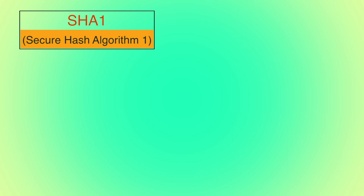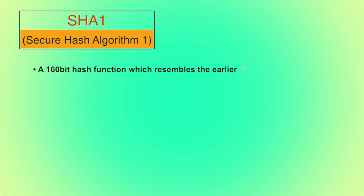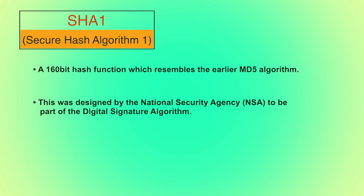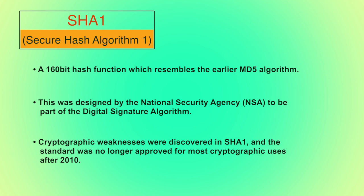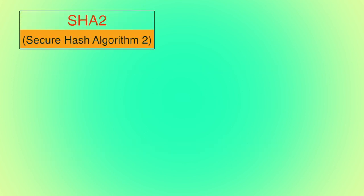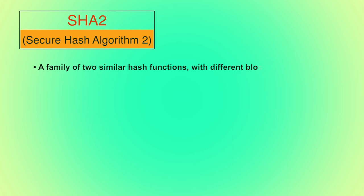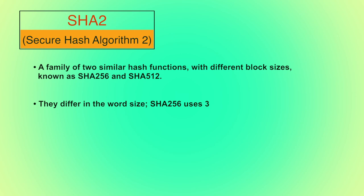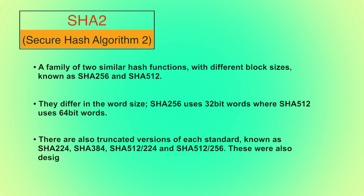SHA-1 stands for Secure Hash Algorithm 1. After the collision attack in MD5, SHA-1 was discovered. It generates a 160-bit hash value and was designed by the National Security Agency (NSA) to be part of the Digital Signature Algorithm. Some cryptographic weaknesses were discovered in SHA-1, and that is why the standard was no longer approved for most cryptographic uses after 2010. SHA-2, Secure Hash Algorithm 2, is a family of two similar hash functions with different block sizes known as SHA-256 and SHA-512. They differ in word size — SHA-256 uses 32-bit words while SHA-512 uses 64-bit words. There are also truncated versions known as SHA-224, SHA-384, and SHA-512/224. These were also designed by the NSA.